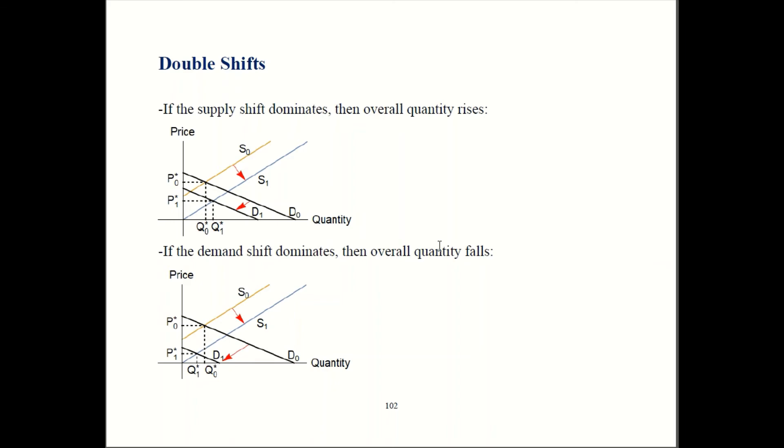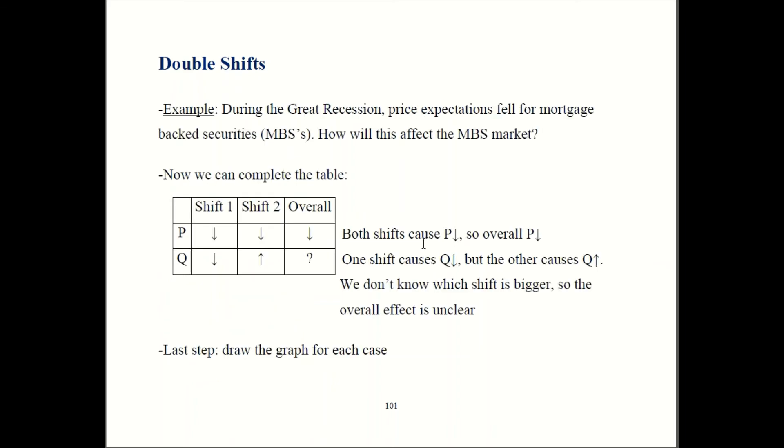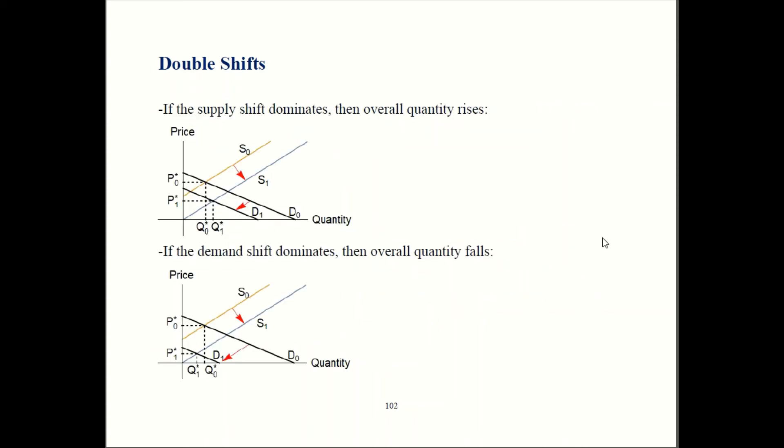Now, I did say the effect on price was clear cut. Said price should go down overall because both shift 1 and shift 2 both drag down prices. Both of our graphs reflect that. Price starts out up here at P0 and it goes down to P1. Price starts over here at P0 goes down to P1. So, they're both showing a price fall.